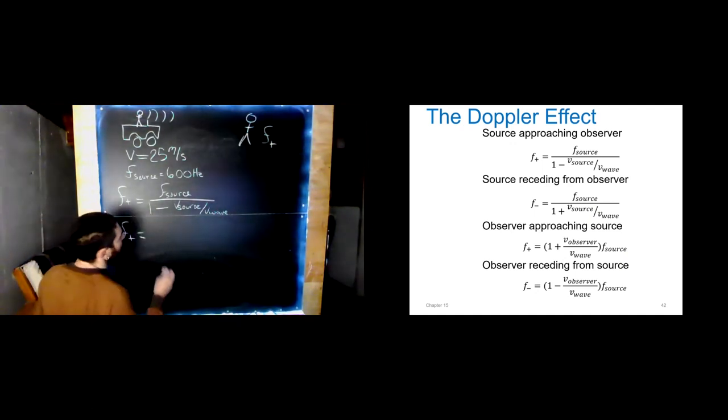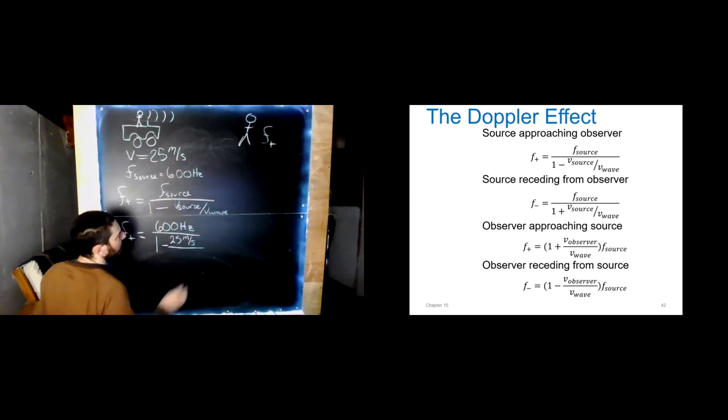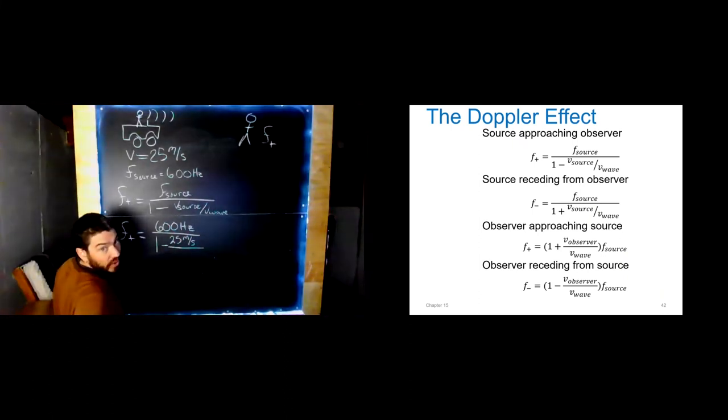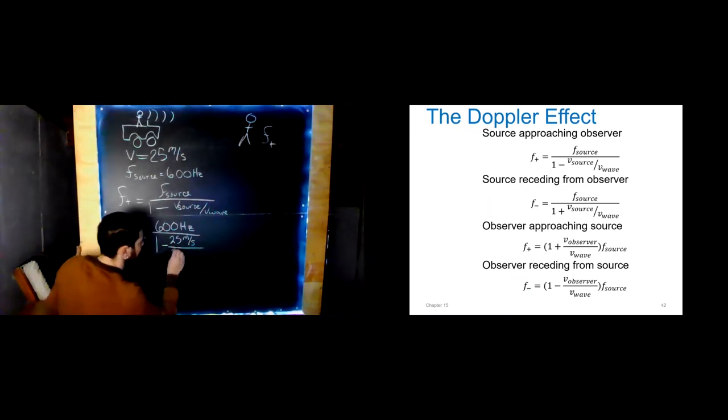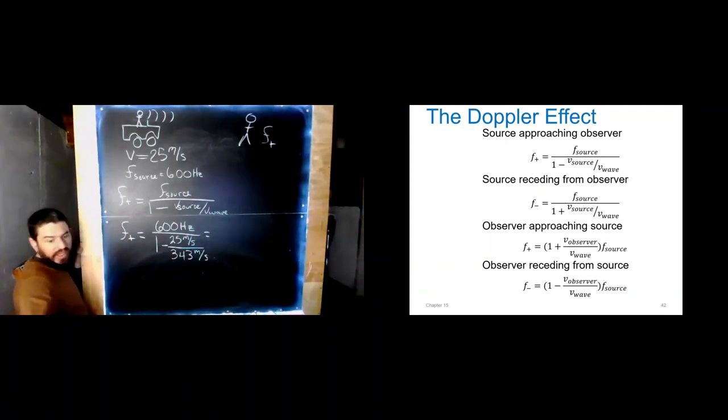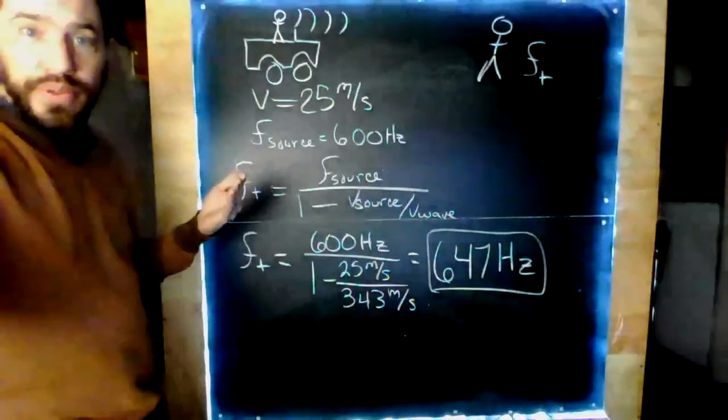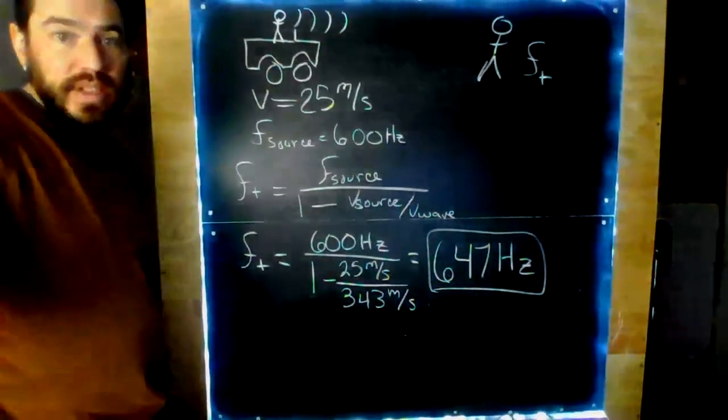There's our equation. And once we've picked out the equation and visualized the situation correctly, these problems typically are just plug and chug. So let's see what we get. The F of the source, well, that was 600 hertz, divided by one minus V source, 25 meters per second, divided by V wave. Well, what kind of a wave is this? A sound wave in air. And I've told you that unless I tell you otherwise, go ahead and use 343 meters per second for the speed of sound. And now we run our calculator. And we got 647 hertz. Does that jive with what we were thinking? Yeah, it should be a little bit of a higher frequency. Makes sense.